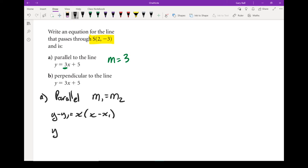My y1 in the, in my point right here is negative 3. So I'm going to go that minus 2. There is the equation of the parallel line.